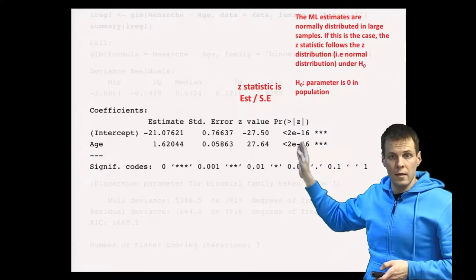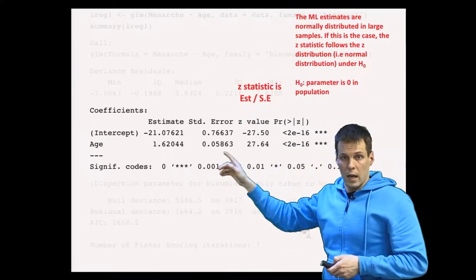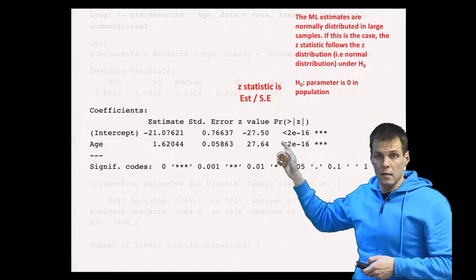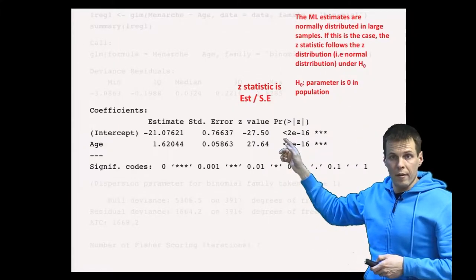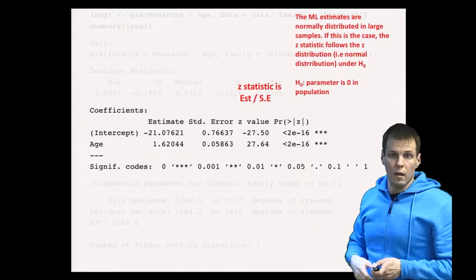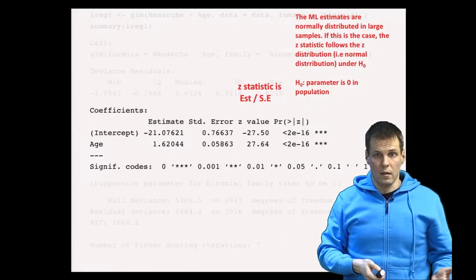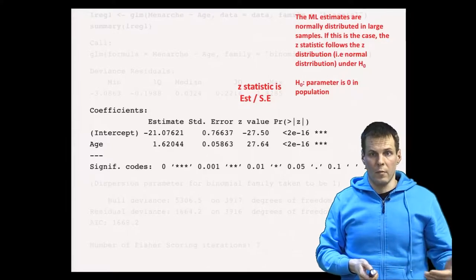So whether age has an effect or not can be interpreted from these p-values. We can see that age has a very statistically significant result. So we can confidently say that age has some kind of effect on the probability of having had menarche.